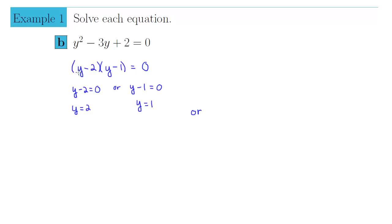Double check, if you put 2 in here, 2 minus 2 is zero, that first factor becomes zero. And if you put 1 in here, 1 minus 1 is zero, that factor becomes zero. So that tells us that our solution set is the set of two numbers, 1 and 2.